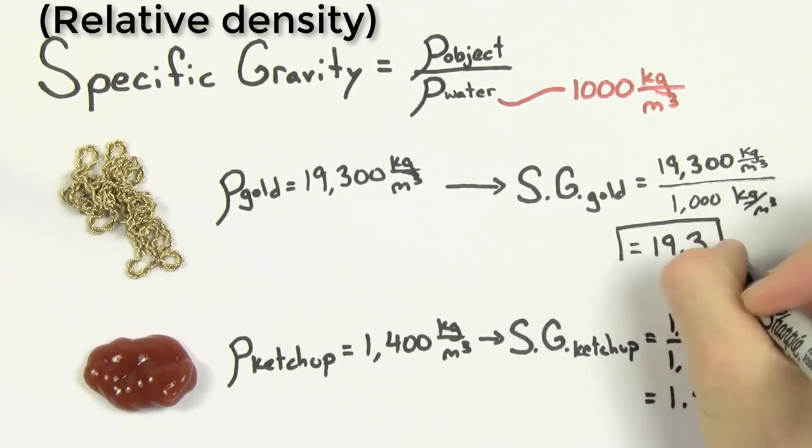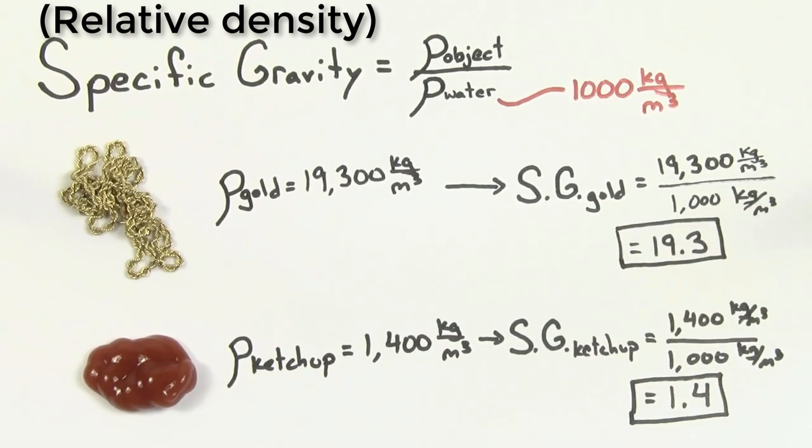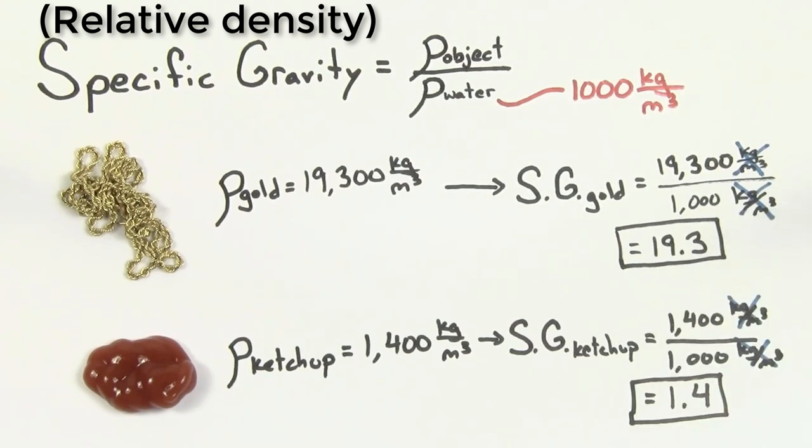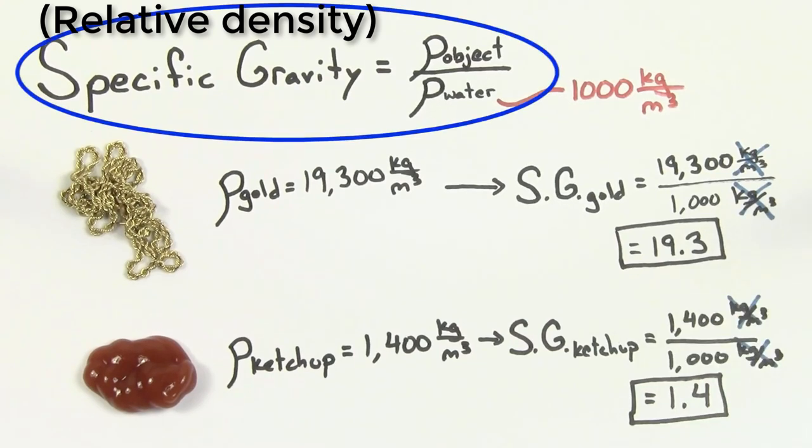Note, there's no units for specific gravity because it's the ratio of one density to another density, so the units cancel each other out. So why even bother defining something called the specific gravity?